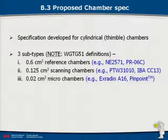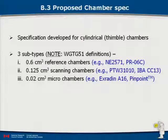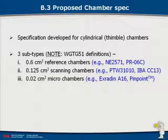The addendum is developing a proposed chamber spec for a reference class ionization chamber. Three subtypes are defined: 0.6 cc reference chambers — the standard NE2571, PR06C, A12; 0.125 cc scanning chambers used for commissioning, such as the CC13 and PTW31010; and microchambers defined as 0.02 cc or less — the A16, PTW pinpoint chambers, and IBA CC01. When I'm talking about reference, scanning, or micro, keep those definitions in mind.